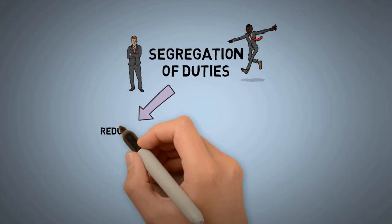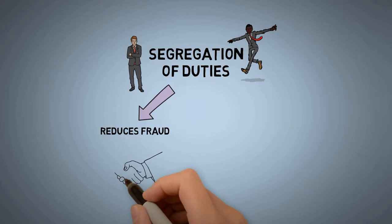Segregation of duties has two primary effects. First, it reduces fraud by requiring collusion between multiple people. Having multiple people involved in a crime makes it easier to detect and harder to conceal.